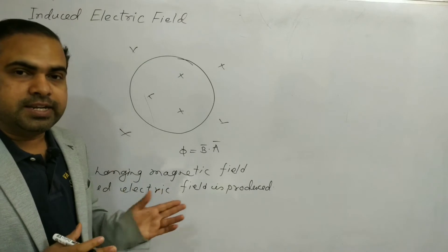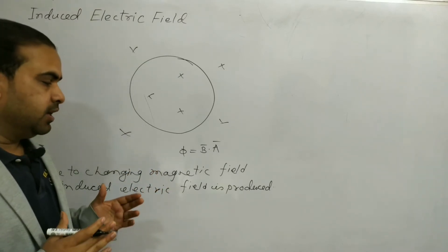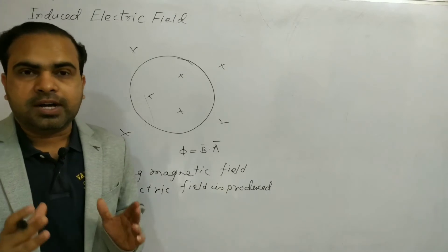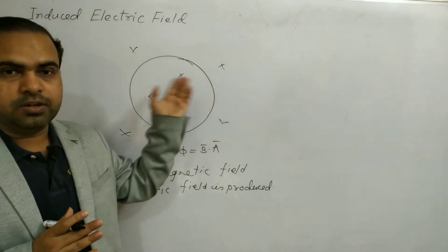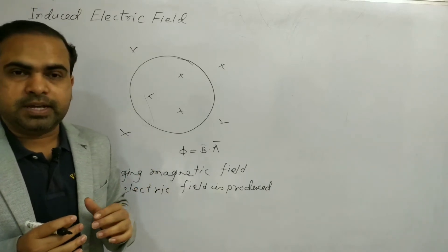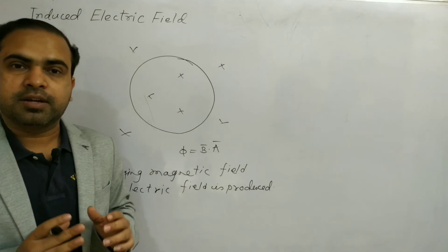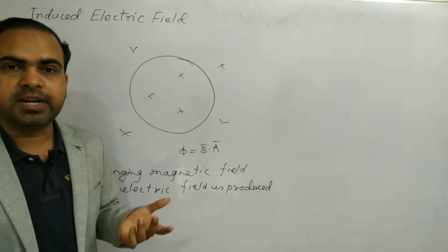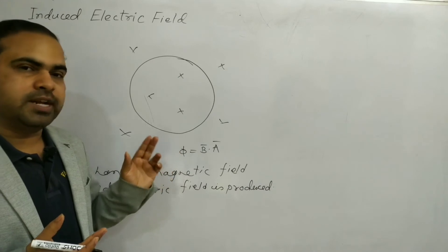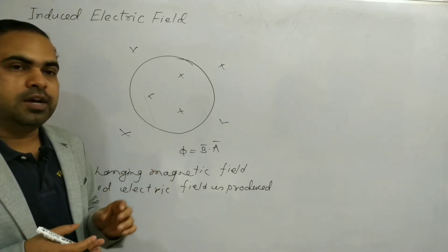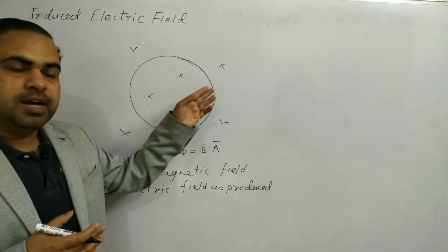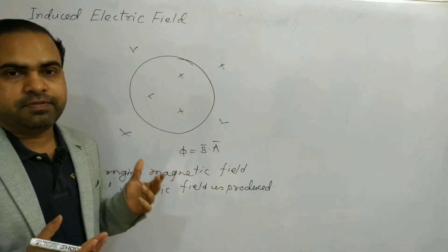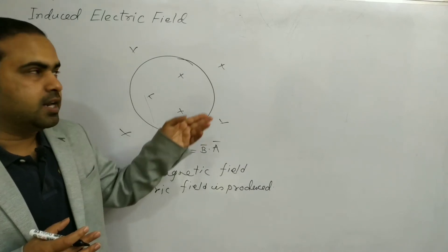It does not matter whether there is a conductor present or not — wherever the magnetic field changes, an induced electric field will be produced in that region. If a charged particle is present in the region where the magnetic field is changing, that charged particle will experience a force due to the induced electric field. And if you have a conducting loop, current will flow through it due to this induced electric field.